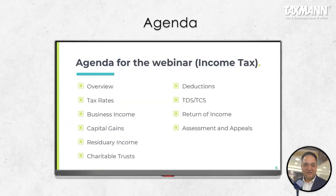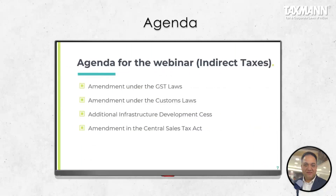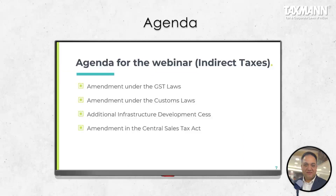We have divided the agenda for today's webinar into two parts. One is for the income tax, wherein I'll cover the discussion in these 10 chapters: overview, tax rates, business income, capital gains, other sources, tradable trust, deductions, TDS, TCS, return of income, assessments and appeals.